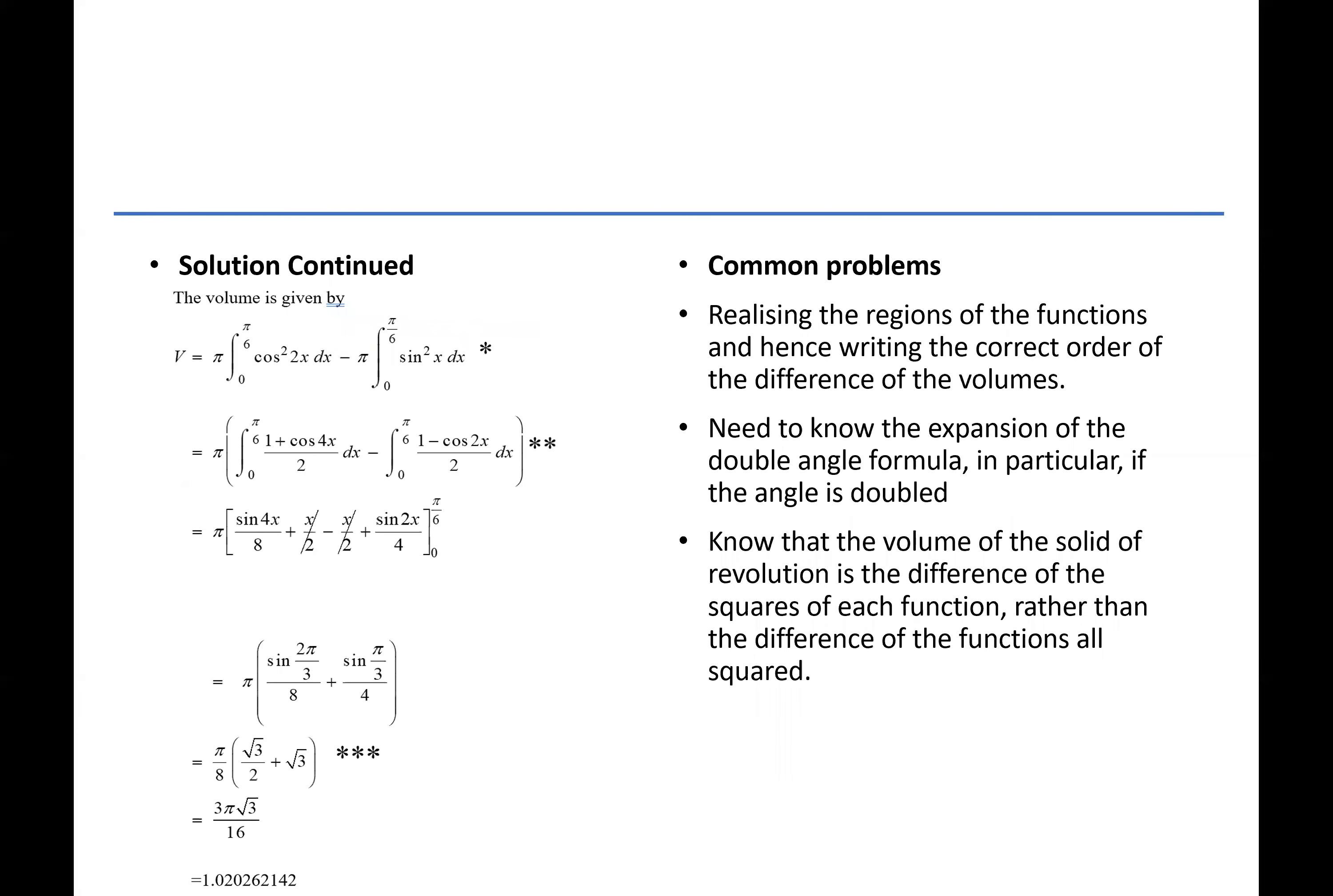Some common problems were firstly realizing the regions of the functions and writing the correct order of the volumes. Another problem was they needed to know the expansion of the double angle formula, in particular if the angle is doubled, so cos squared 2x ended up as cos 4x. They need to know that the volume of solids of revolution is the difference of the squares of each function rather than the difference of the entire functions.